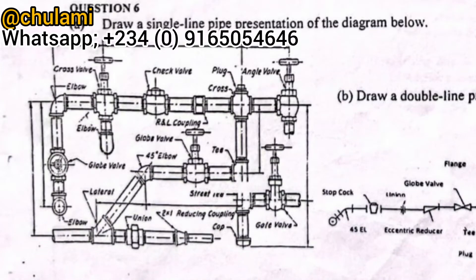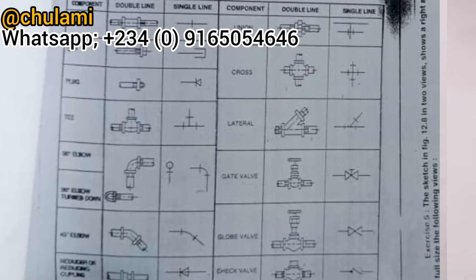The question says: draw a single line type representation of the diagram below. If you check the diagram displayed on your screen, you will see a pipeline setting that you have to convert into a single line presentation. You can see the double line presentation and the single line presentations here — for each of these objects you present them with their corresponding symbols.